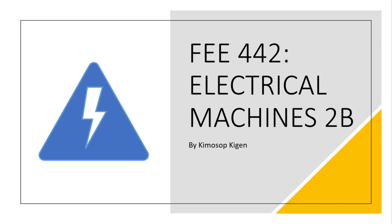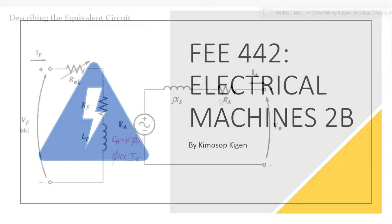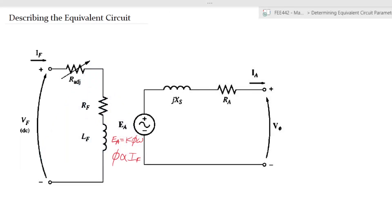Let's begin. The first topic we'll be dealing with today is determining the synchronous generator parameters. Last week we saw that the equivalent circuit for a single-phase or three-phase synchronous generator — to make it simpler, instead of having the three armature windings we will only use one set. This is a per-phase equivalent circuit.